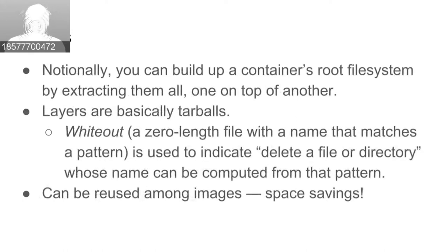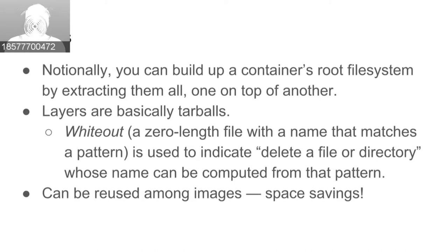The other type of data in an image is filesystem layers. Layers are called that because when building up the root filesystem, you're extracting one on top of another until you have a finished product. Layers also include special information called whiteout entries — specially formatted entries which say 'delete this thing' — allowing a layer to remove contents from a layer below it.